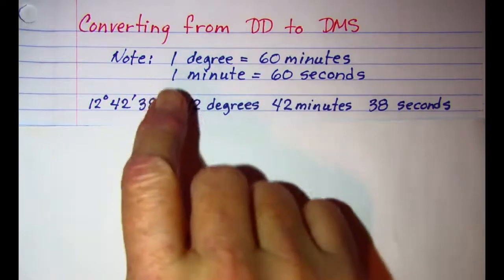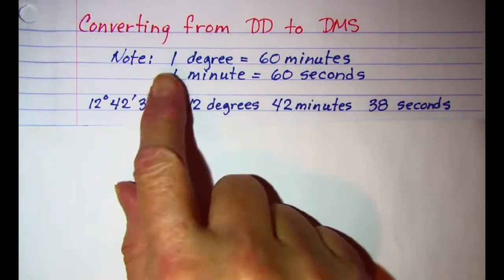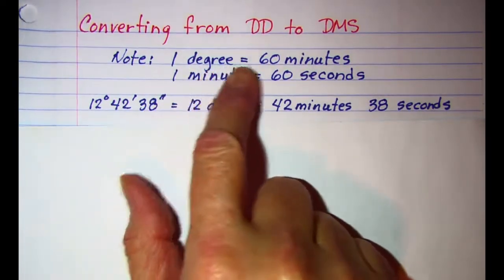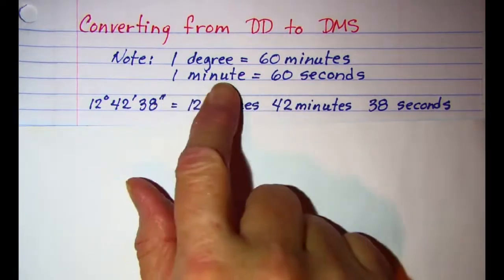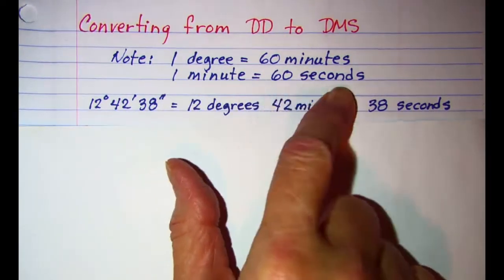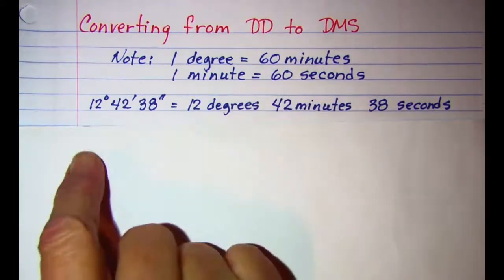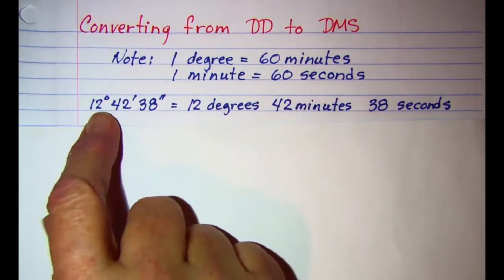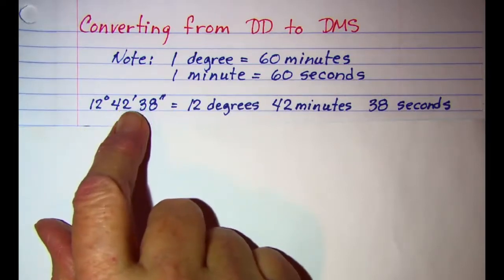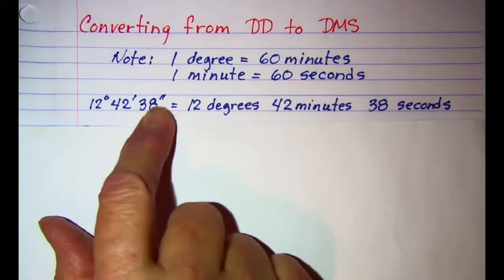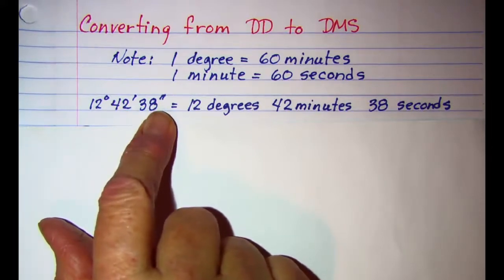Before we begin our example, be aware that 1 degree is equal to 60 minutes and 1 minute is equal to 60 seconds. The notation that we use is superscript 0 is degrees, 1 apostrophe is minutes, and 2 apostrophes is seconds.